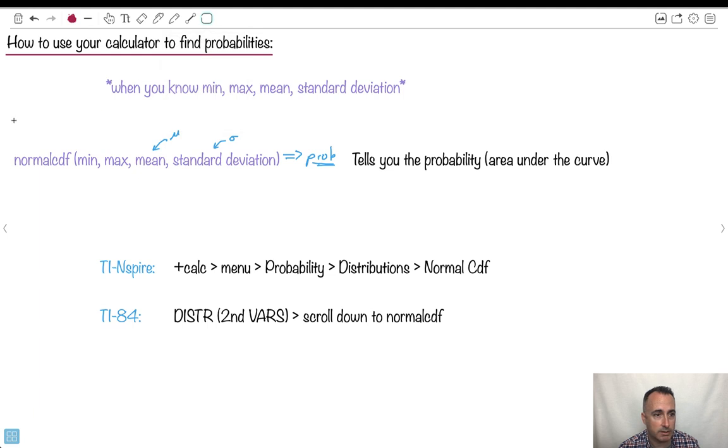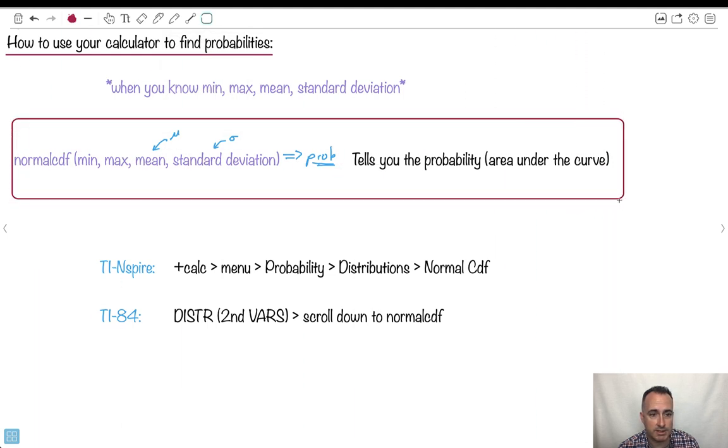And this is going to be the big important part here. Normal CDF. This is the important thing. Normal CDF. Now we always use CDF. Always use CDF for normal. So for binomial we have binomial PDF and CDF, but for normal distributions we're just going to use normal CDF. Now it depends if you use a TI-Inspire or the 84.